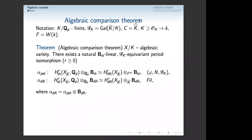Let me start by reviewing the algebraic situation which many of you are familiar with. I'm going to assume for simplicity that K is a finite extension of Q_p, though it's not necessary. I will have the Galois group G_K of K. C will be my C_p — the completed algebraic closure of Q_p. Small k is going to be the residue field, which is perfect. O_F is the Witt vectors of K and F would be the fraction field. So I'm going to state the algebraic comparison theorem — p-adic étale homology in a very general form, due to Beilinson.